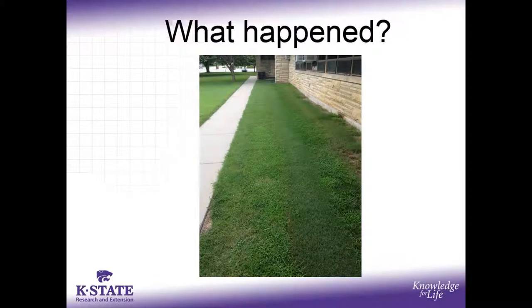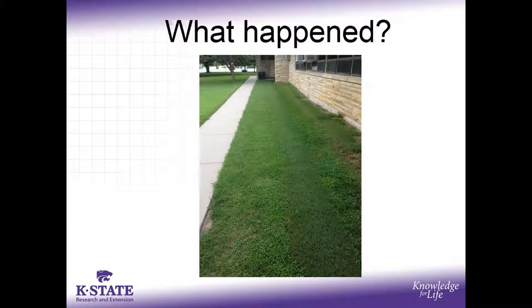A final diagnostic example: bermudagrass and crabgrass alternating in a linear pattern that's not herbicide-related — it's from a zero-turn mower's wheel traffic. Bermudagrass can tolerate the heavy traffic from the mower wheels, but crabgrass cannot, so the crabgrass dies in the wheel tracks while the bermudagrass survives, creating that striped pattern.